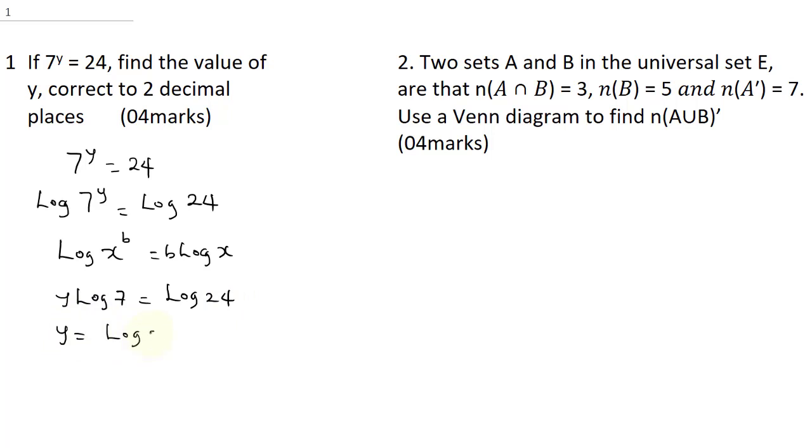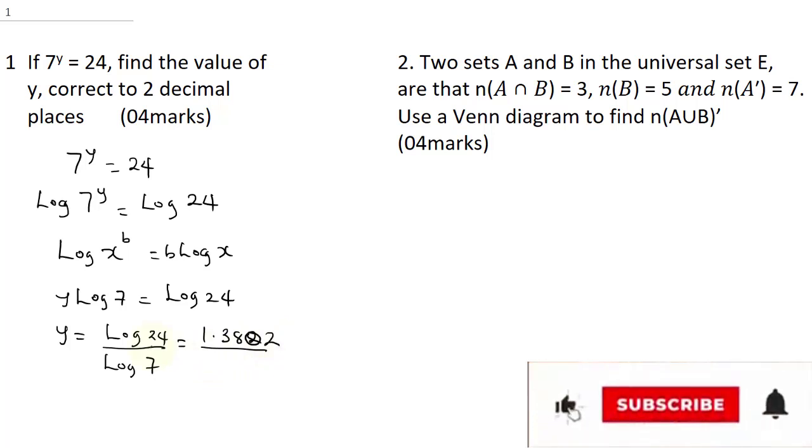This will be log 24 all divided by log 7. So when you punch log 24 in your calculator, you are going to get 1.382, all divided by, I think 1.3802, all divided by this will be 0.845. So when you do this divided by this, you are going to get 1.635,